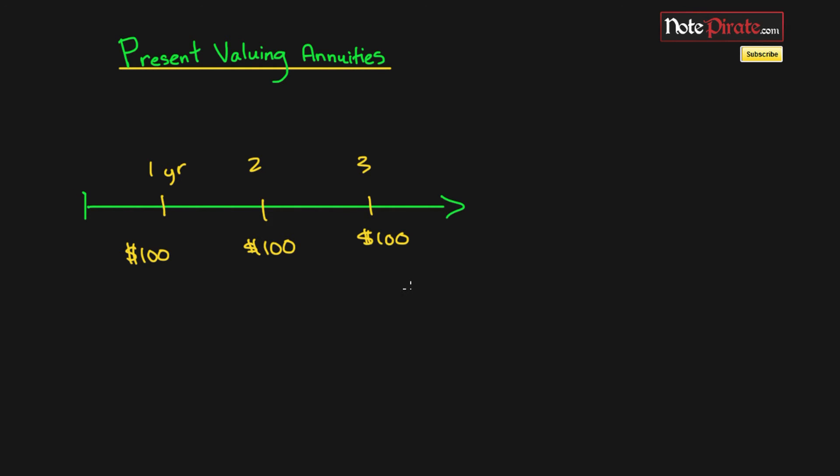And the annuity formula is going to look something like this: it's going to be cash flows times one minus one divided by one plus r to the power of t, divided by r. Very simple formula, right?